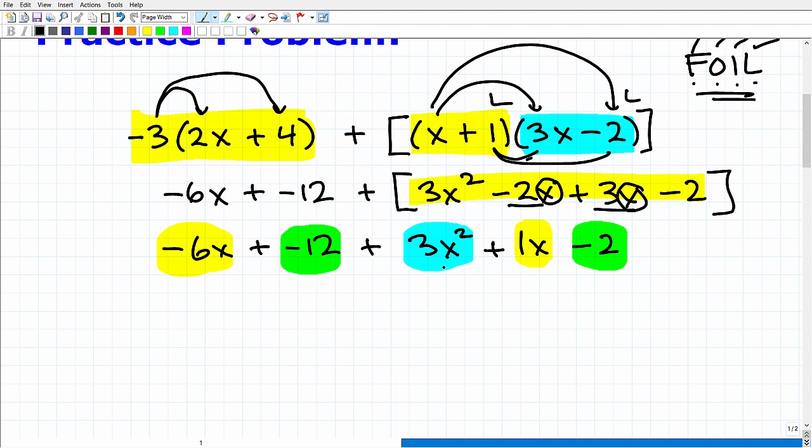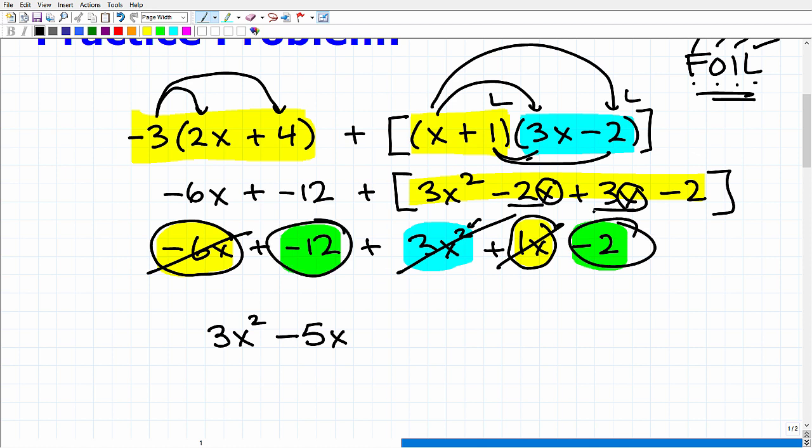In algebra, we like to write things from the highest power. So the highest power is this right here first. This is going to be 3x squared. And now we'll go down to our xs. I have a negative 6x and a 1x. So negative 6 plus 1 gives me a minus 5x. Then I'm left with our numbers. I have a negative 12 and a negative 2. That gives me a negative 14. And that is my final answer.